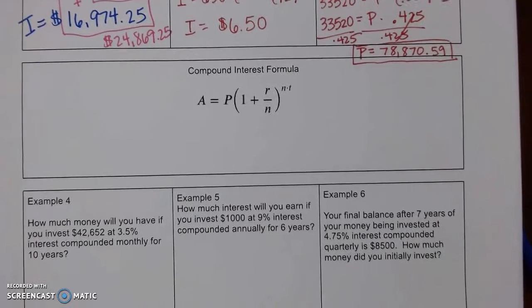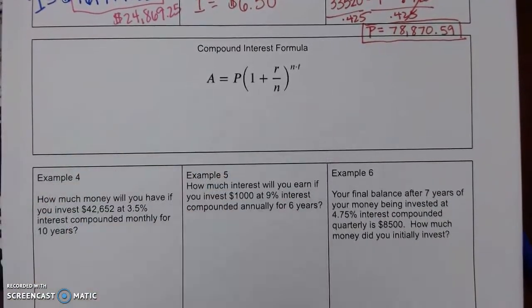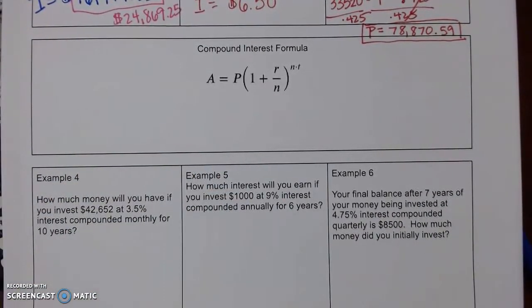Alright. Now, a compound interest formula, they kind of figure out, they add your interest at different increments. So instead of just doing it once a year, we can do it every month, every day, every hour. And the more you do it, the more money you make.